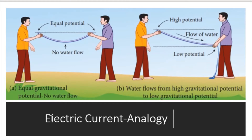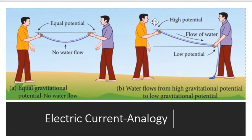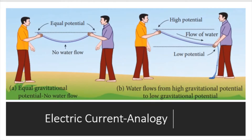To understand electric current, here is a small analogy. If there is equal potential in a water pipe, water will not flow. If water needs to flow, there should be some potential difference — from higher potential to lower potential, water flows. Similarly, for electric current flow, the same logic applies: electric current flows from higher potential to lower potential.